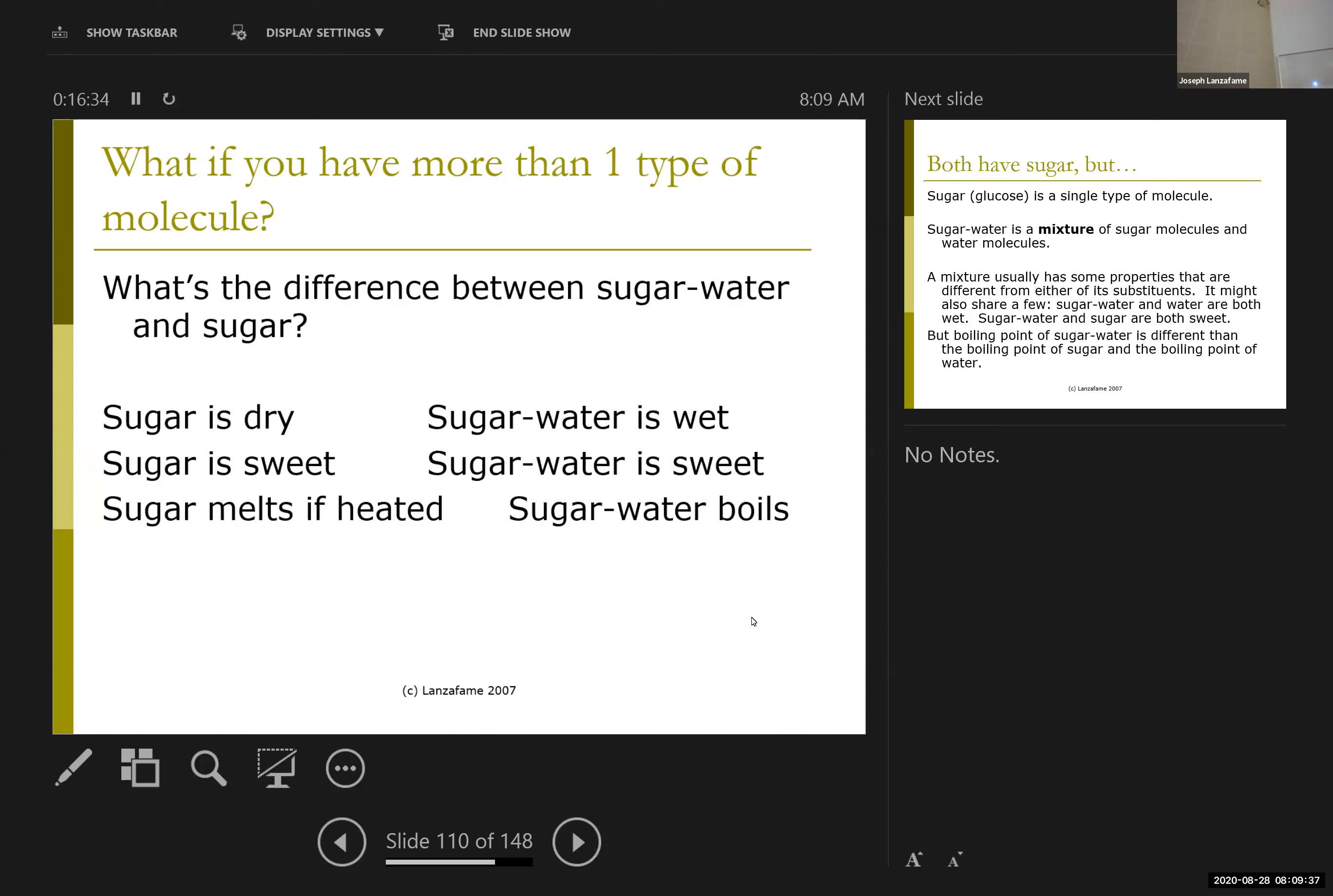And so my mixture of sugar and water has some properties in common with the sugar and some properties in common with the water, and in some cases properties that might not actually fit with either one. So sugar is a solid, sugar water is a liquid, sugar is sweet, sugar water also sweet. If you heat up sugar, it melts, if you heat up sugar water, it boils.